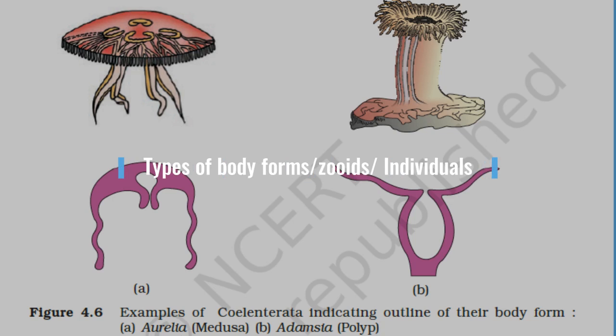This diagram is from NCERT. It shows that Cnidarian body forms — also called zooids or individuals — are of two types: Medusa and Polyp.